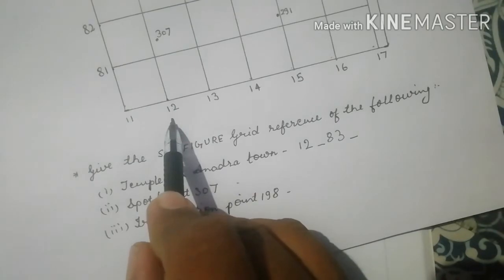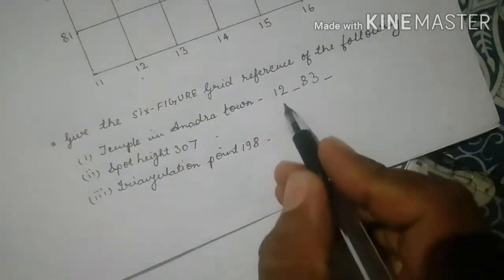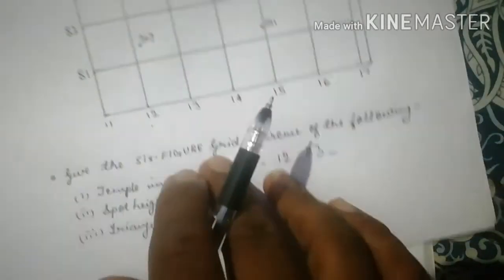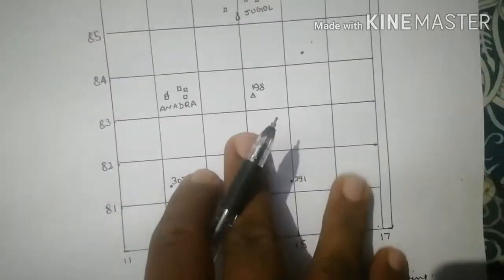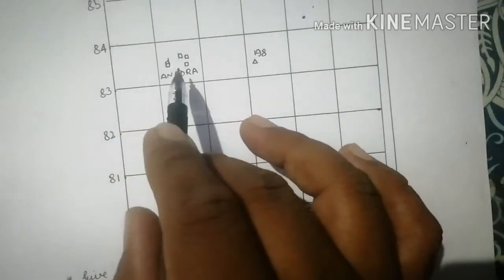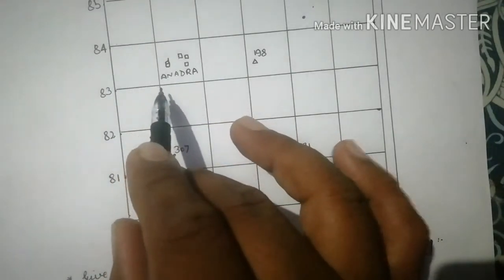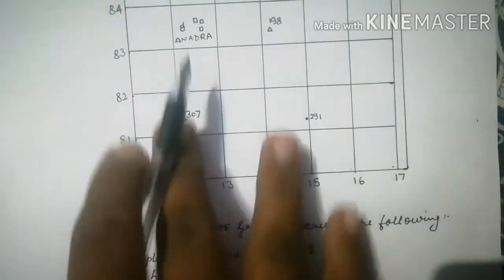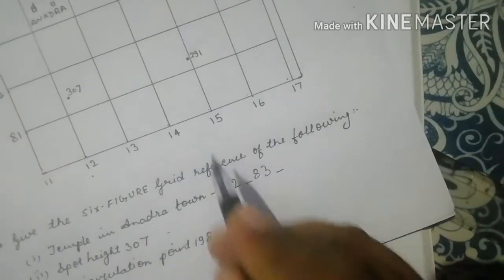Write 12 here, leave a space. Then go for the horizontal lines. The horizontal lines are 83 and 84. Between these two northings the temple lies, and the one with lesser value is 83. Write down 83 and give a space.